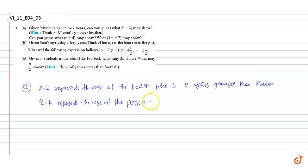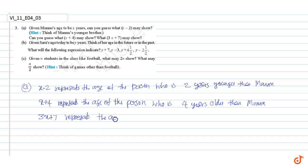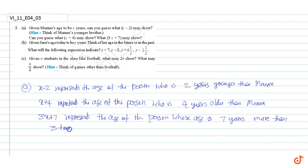...that can be Manu's elder brother, who is 4 years older than Manu. 3x plus 7 represents the age of the person whose age is 7 years more than 3 times Manu's age — that can be his father.